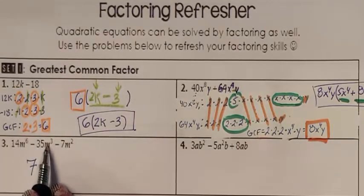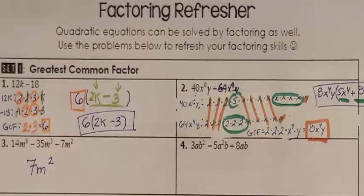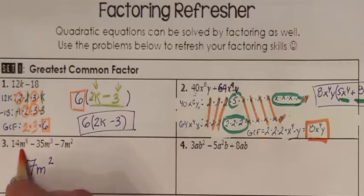They do. They all have m's. The most amount of m's they all have in common is m squared. So this is my GCF.